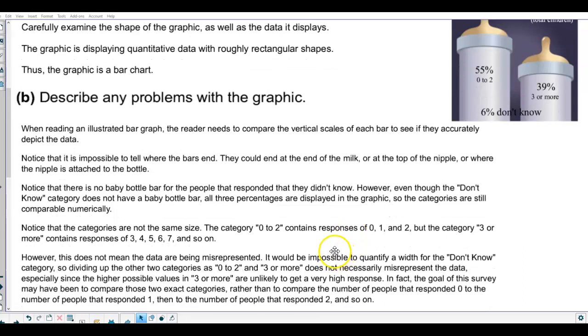Notice that the categories are not the same size. The category 0-2 contains responses of 0, 1, and 2, but the category 3 or more contains responses of 3, 4, 5, 6, and 7, and so on.